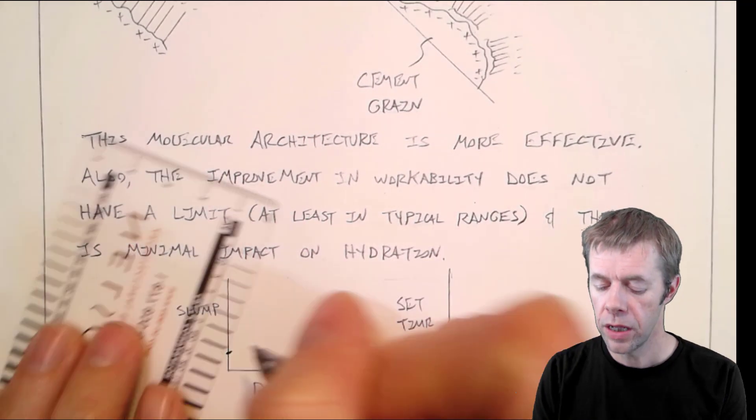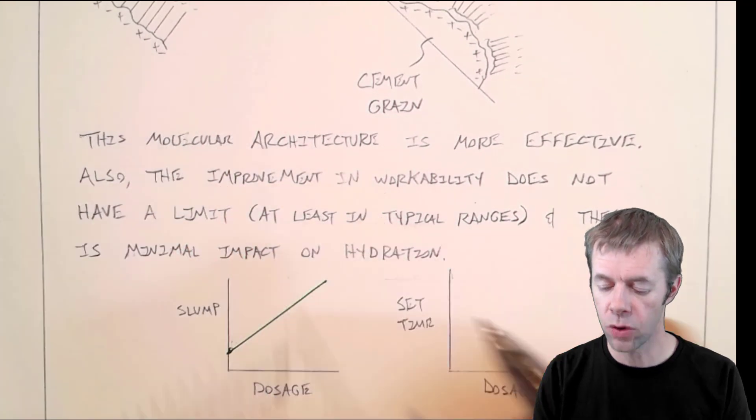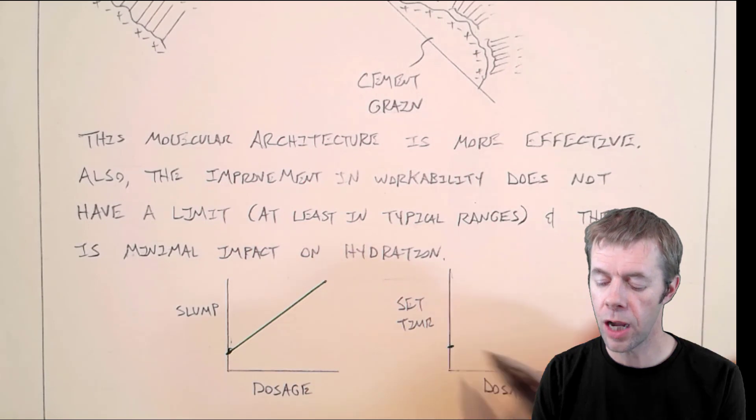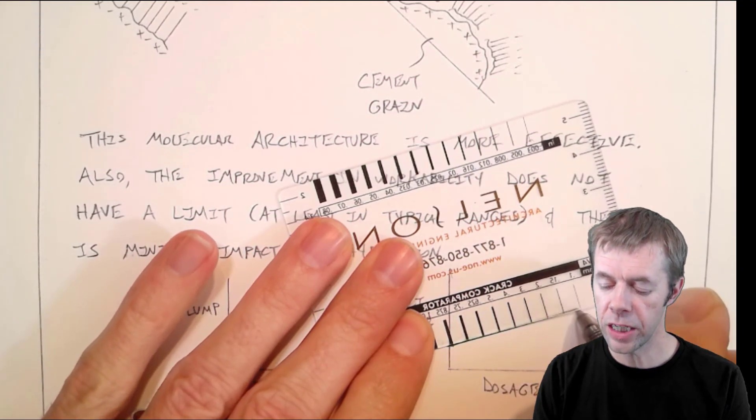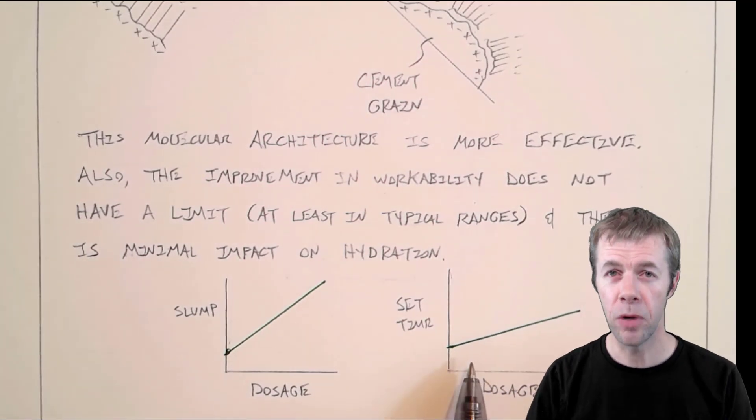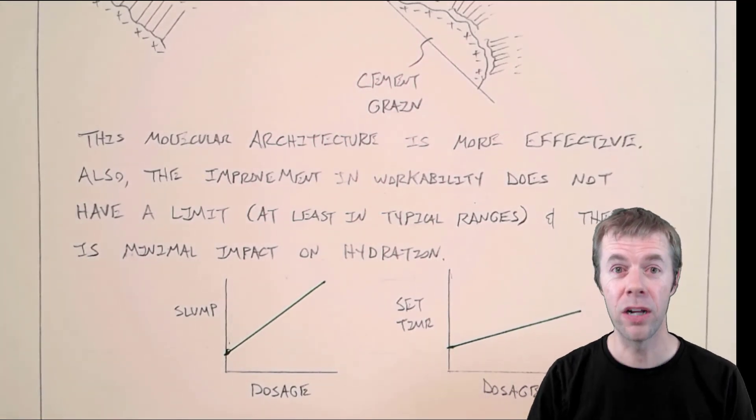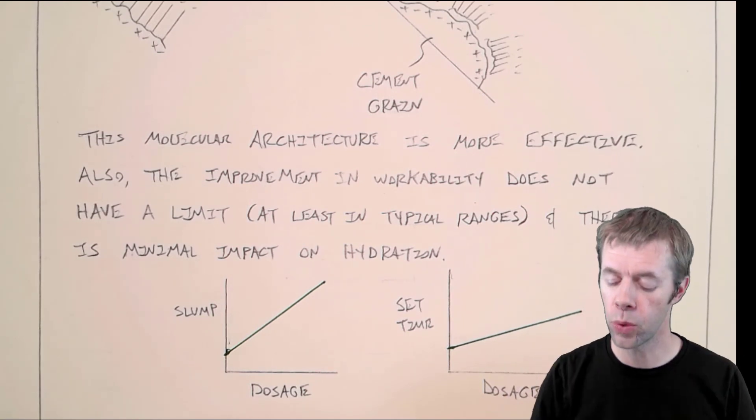For example, if your slump starts out here, with dosage you can get extremely high slumps. And with set time, your set time is going to go up with dosage, but it's not going to go up near as high as it would with the other systems. This line is much flatter, and it's linear, so you can at least predict. Linear is good. Prediction is good.